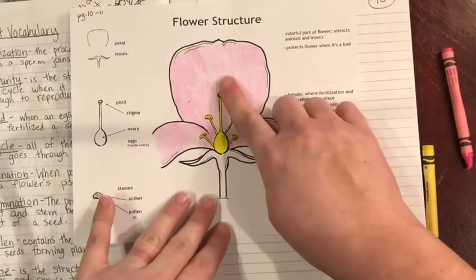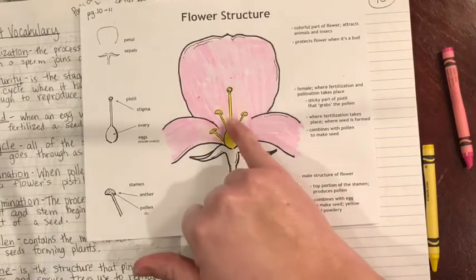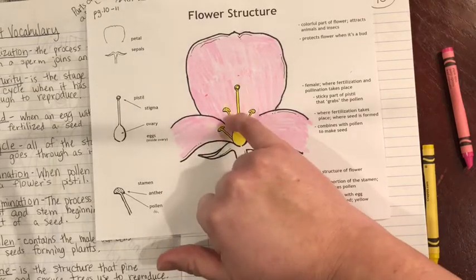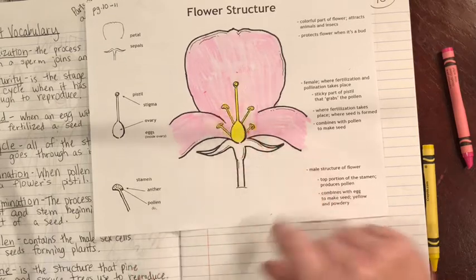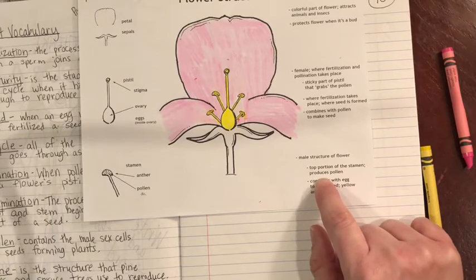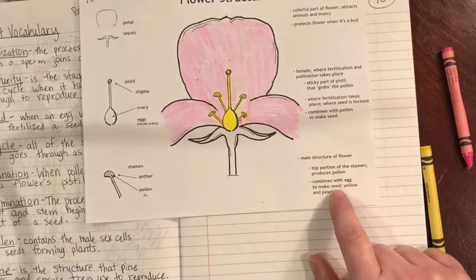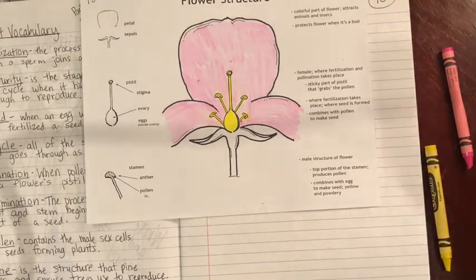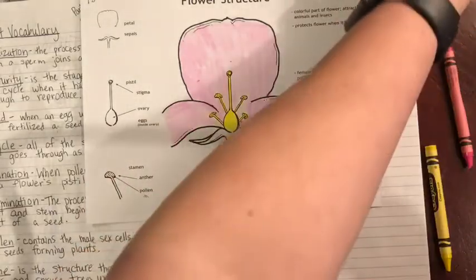Once you have finished coloring in the petals, go ahead to the bottom portion — this is where we're going to mention more of the reproduction parts of our flower. This particular part is the stamen, and this is where our pollen is stuck to the top — it's the male structure of the flower. The top portion of the stamen produces the pollen, which combines with the egg from the ovary to make the seed. Go ahead and find a green to shade in the bottom portion of the plant as well.